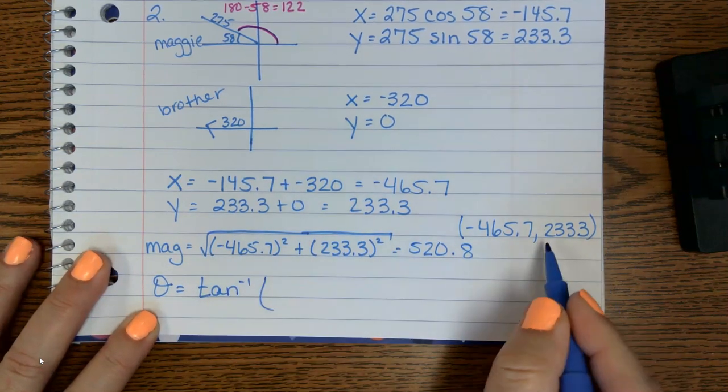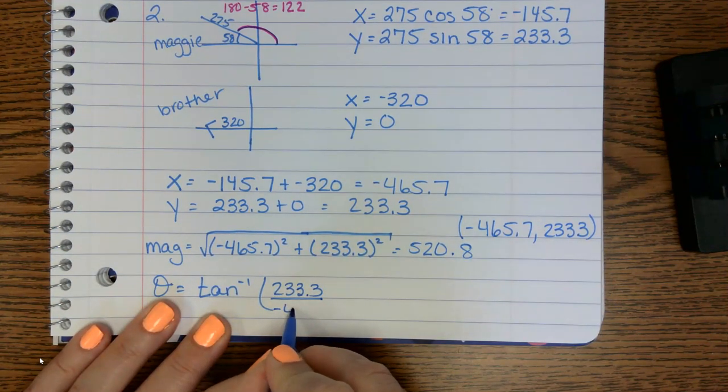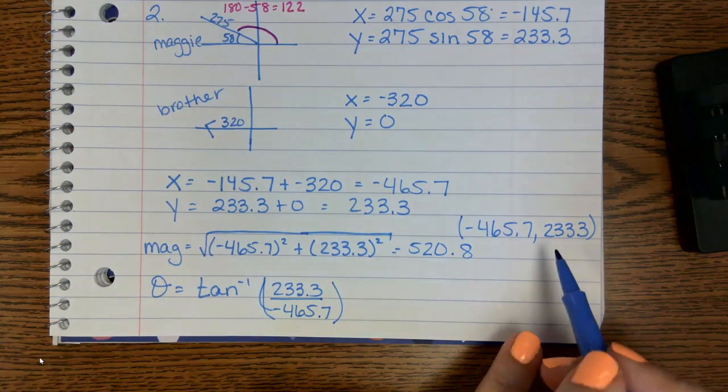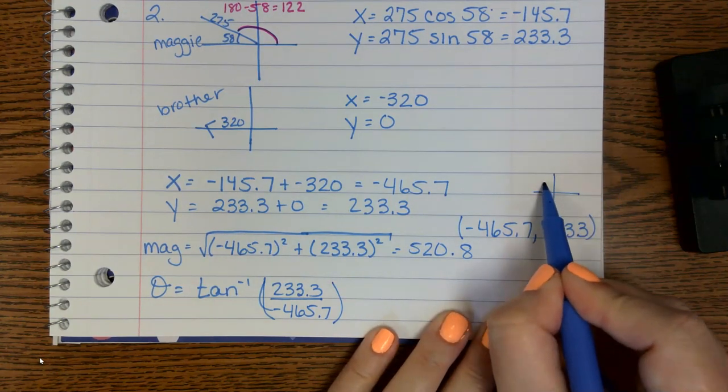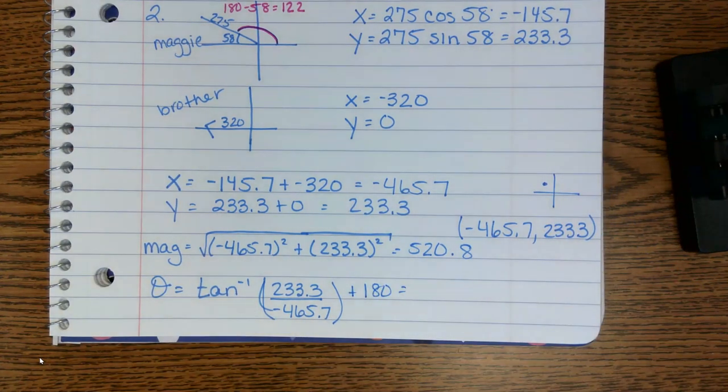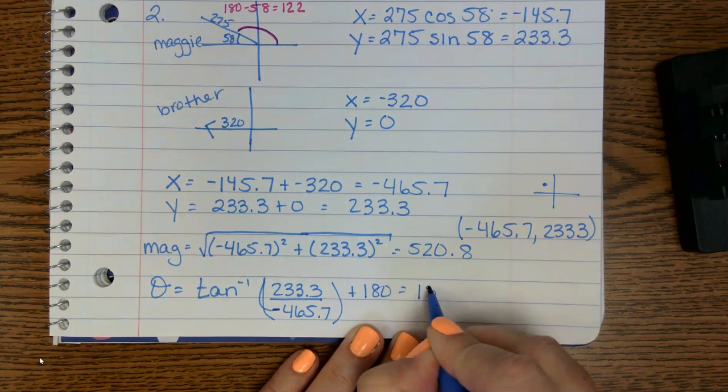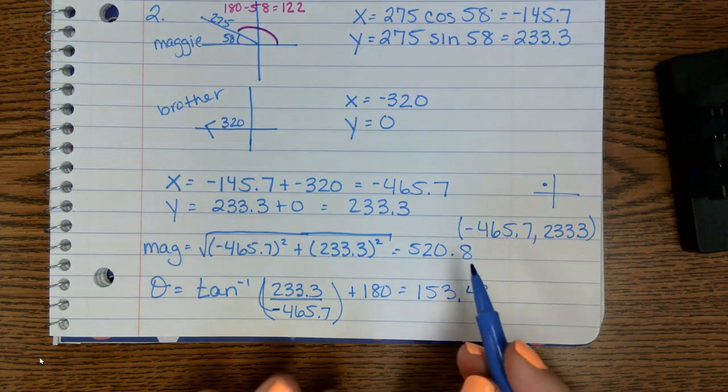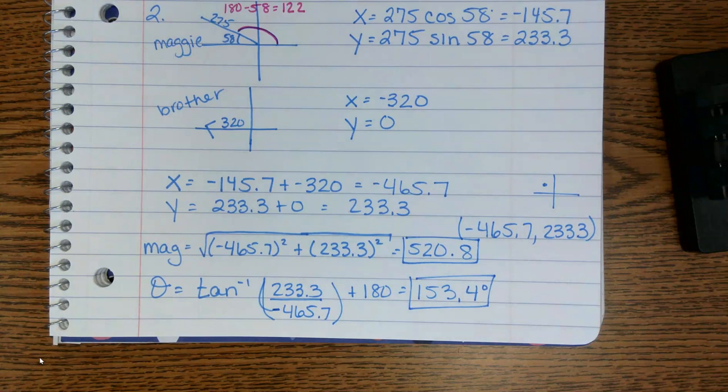Now we've got to find our direction. Inverse tangent of y over x. Now, the one thing we've got to go figure out is what quadrant this little guy is. So negative and positive puts me right there. So I now need to add 180 degrees. And you're going to type this in. And I get 153.4 degrees. Here's my answer: magnitude and angle.